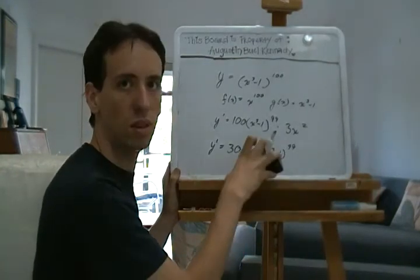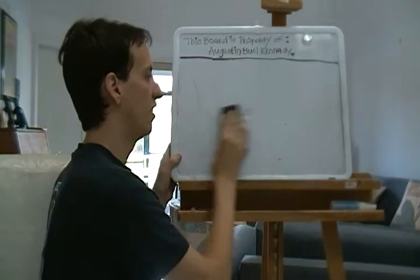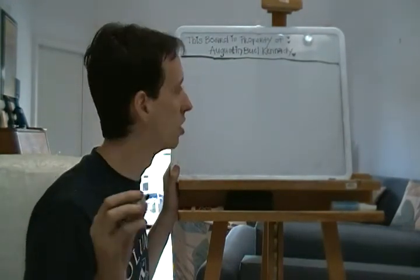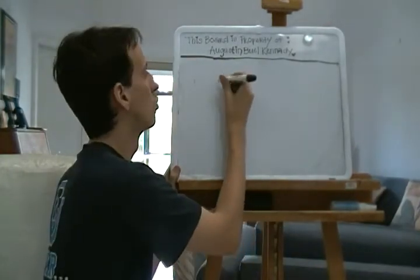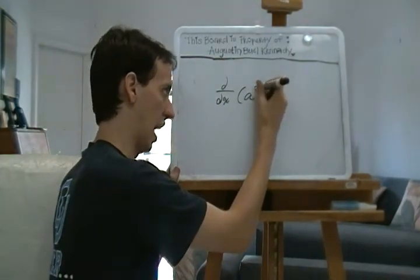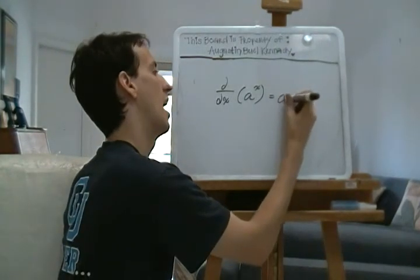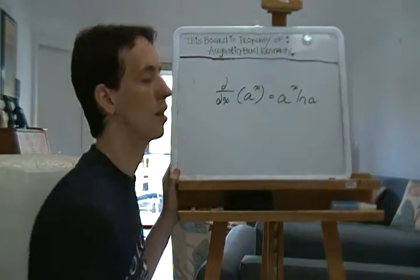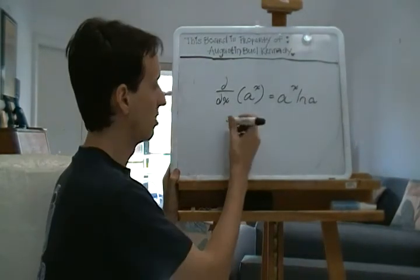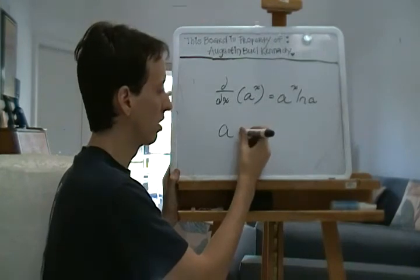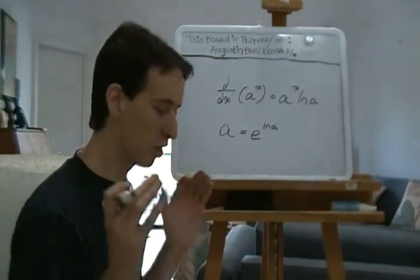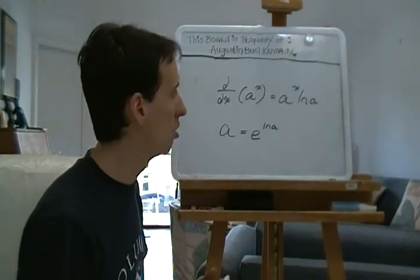Now I'll leave you an exercise. You can use the chain rule to prove that d/dx[a^x] = a^x · ln(a). What you'll need to know is the exponential identity a = e^(ln a). You'll need creative usage of parentheses, but you should be able to prove it.